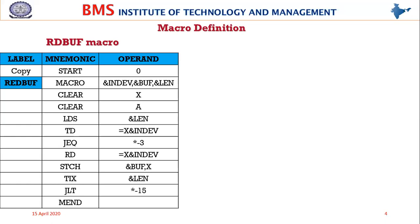The program starts at zero. READBUFF is the name of the macro, followed by the assembler directive MACRO, specifying that the following set of statements until MEND is a macro definition. It takes three parameters: &INDEV, &BUFF, and &LENGTH - the ampersand indicates these are parameters to the macro. These are formal parameters which will be replaced by actual parameters during invocation.